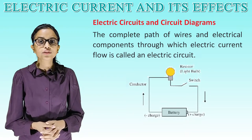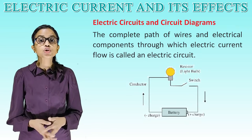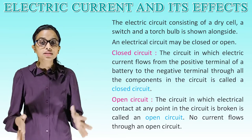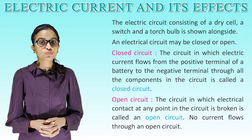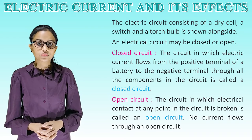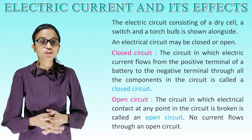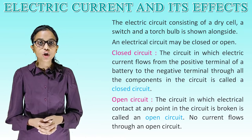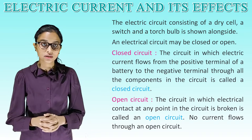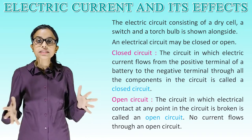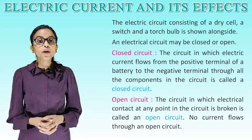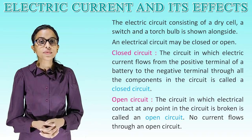The complete path of wires and electrical components through which electric current flows is called an electric circuit. The electric circuit consisting of a dry cell, a switch, and a torch bulb is shown alongside. An electric circuit may be closed or open. Closed circuit: the circuit in which electrical current flows from the positive terminal of a battery to the negative terminal through all the components is called a closed circuit. Open circuit: the circuit in which electrical contact at any point is broken is called an open circuit. No current flows through an open circuit.